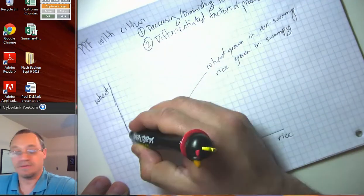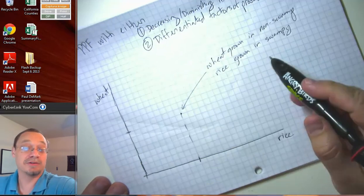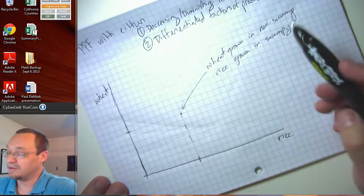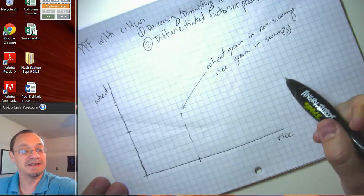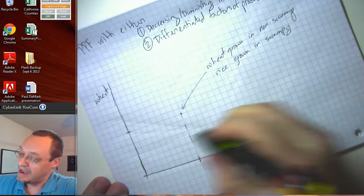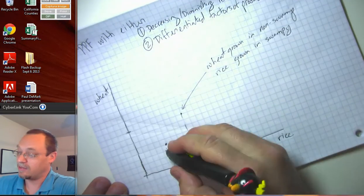Now notice we're assuming people are not stupid. An alternative way to split up production could be, well, let's grow the wheat in the swampy areas and let's grow the rice in the non-swampy areas. And so that might be a situation like this.